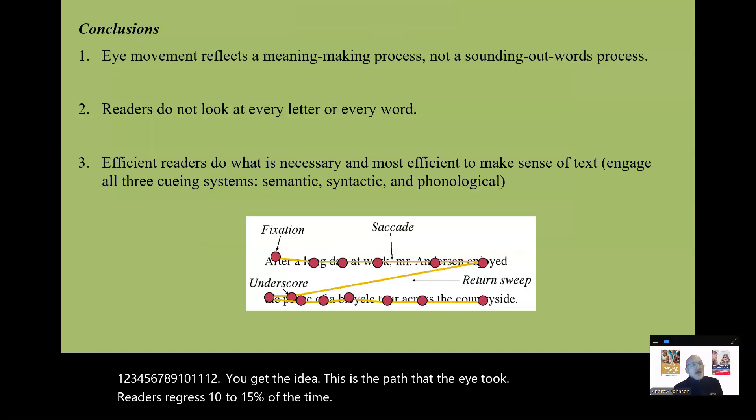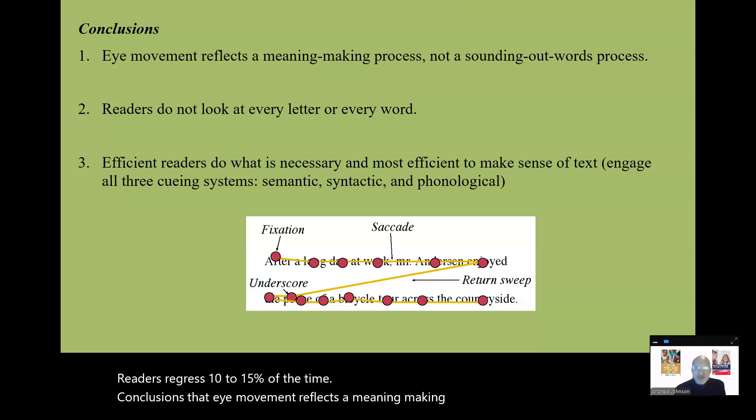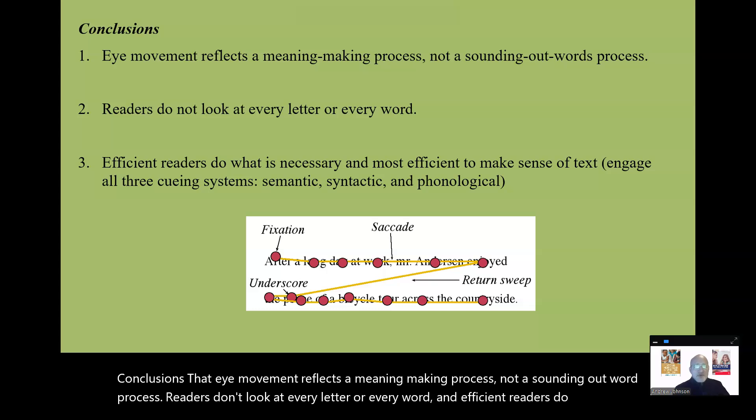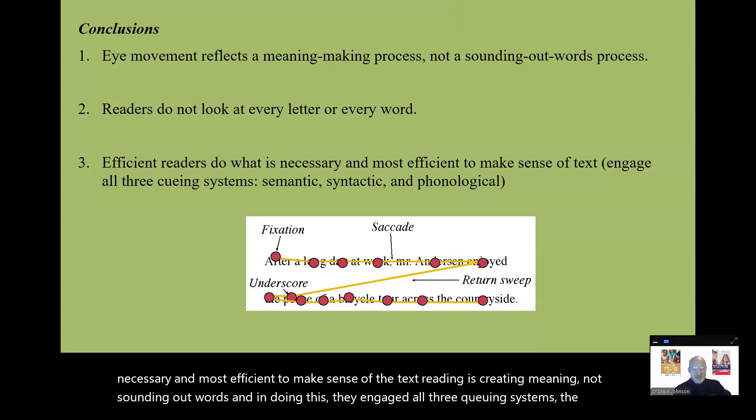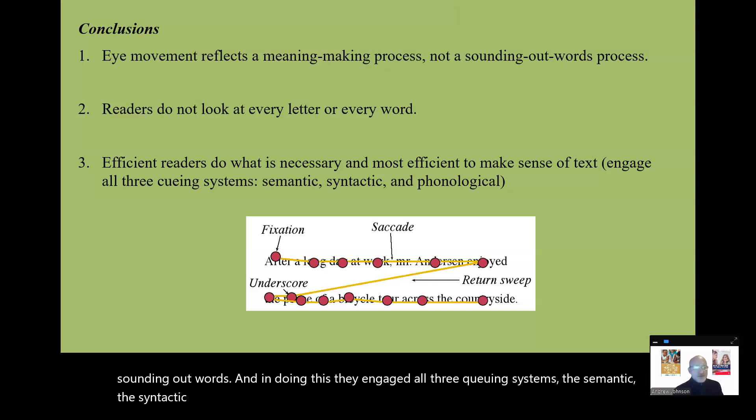Conclusions. That eye movement reflects a meaning-making process, not a sounding-out word process. Readers don't look at every letter or every word. And efficient readers do what's necessary and most efficient to make sense of the text. Reading is creating meaning. Not sounding-out words. And in doing this, they engaged all three cueing systems. The semantic, the syntactic, and the phonological cueing systems.